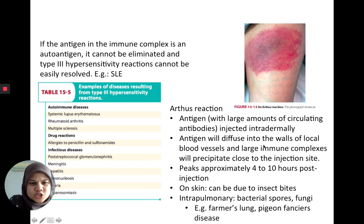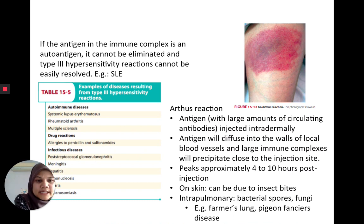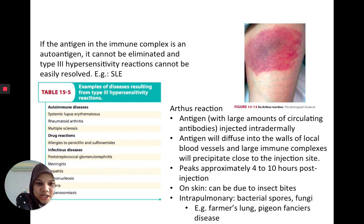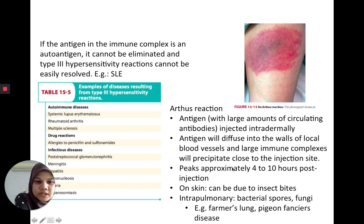Another example of a type 3 reaction is the Arthus reaction. When antigens are injected intradermally, they diffuse and form large immune complexes with antibodies that precipitate near the injection site, producing a severe rash about 4 to 10 hours after injection. This can also occur due to insect bites.